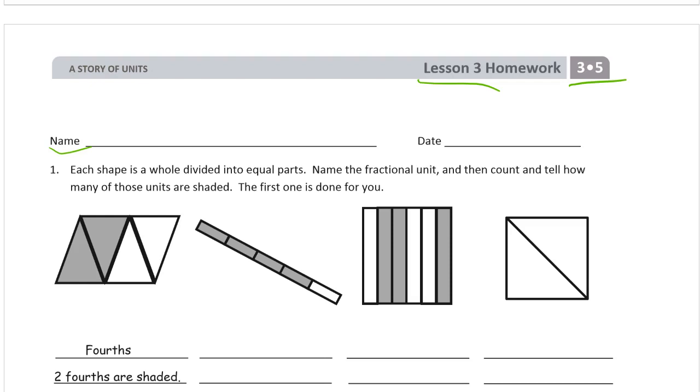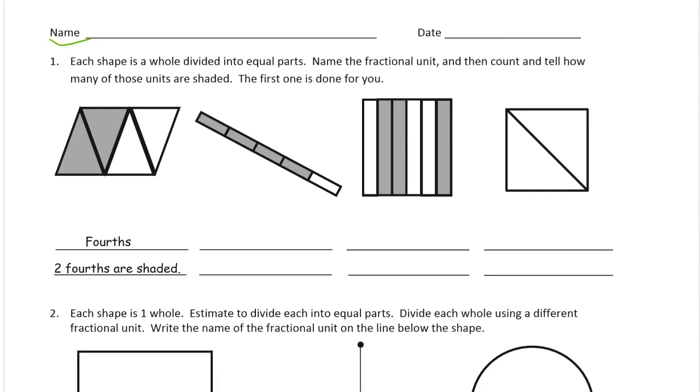Each shape is a whole divided into equal parts. Name the fractional unit and then count and tell how many of those units are shaded. The first one's done for you. So here's our example.